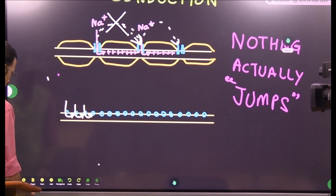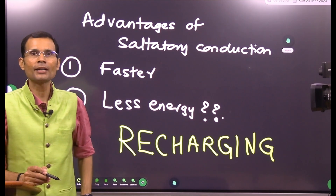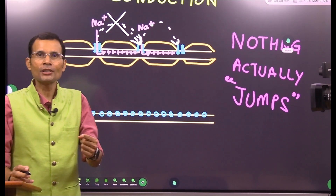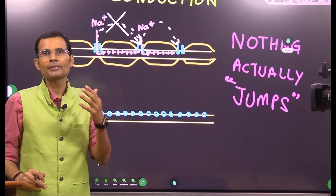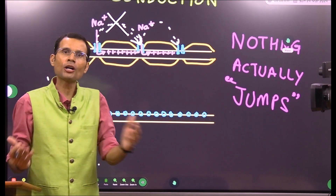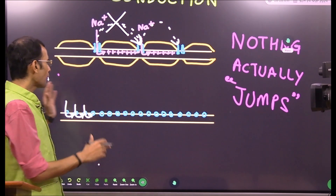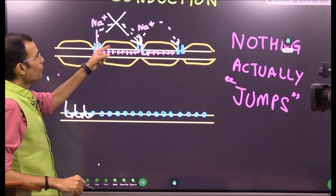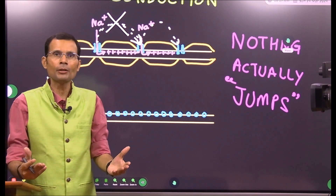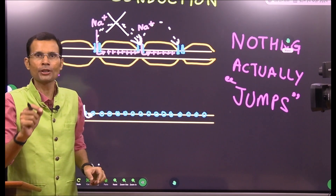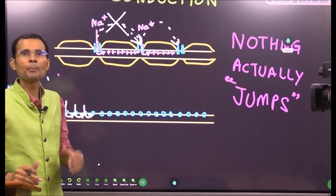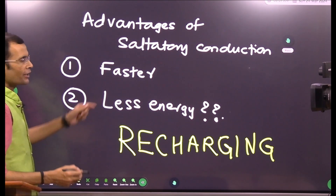Let's see the benefits of saltatory conduction — two important advantages. First, it is faster. If action potential were to develop at every next point, there would be a time lapse — action potential takes at least one millisecond, so more action potentials means more time to travel from point A to point B. In the myelinated nerve fiber, only the nodes of Ranvier generate action potential — just a few points — and the rest is electrotonic conduction, which is much faster because it's a direct spread of charges.